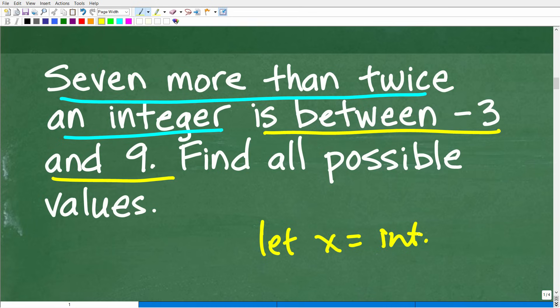Let's just let x equal this integer. There's two aspects to this problem. We have seven more than twice an integer - let's come up with an algebraic expression for that part. And then this is going to be between negative 3 and 9.